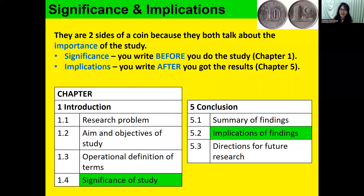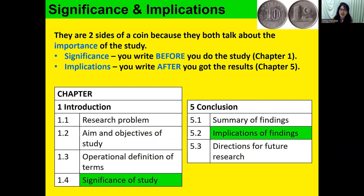Later, when you have collected the data and analyzed the results, you report the implications of the findings — this is written in the last chapter. In the chapter table of contents, significance is section 1.4, the last section of chapter one. In chapter five, it comes right after the summary of the findings, explaining how the findings are important to the field of knowledge.